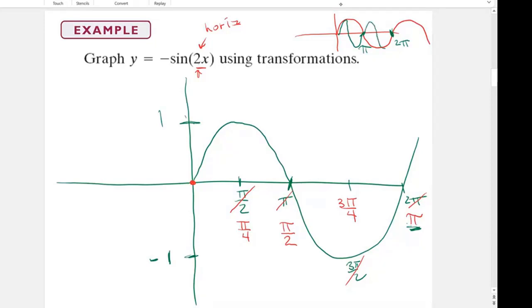And if I continue on, notice I get 2 cycles, 2 cycles between 0 and 2 pi. If I look at the green, I've now got 2 cycles. If that was 3x, I would have 3 cycles between 0 and 2 pi.